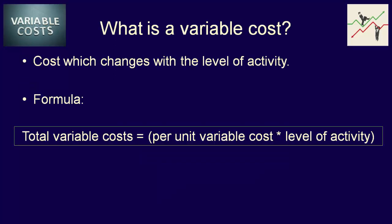So to recap: as the level of activity increases, total variable costs increase. As the level of activity decreases, total variable costs decrease. And we now have a formula which we can apply in the future.